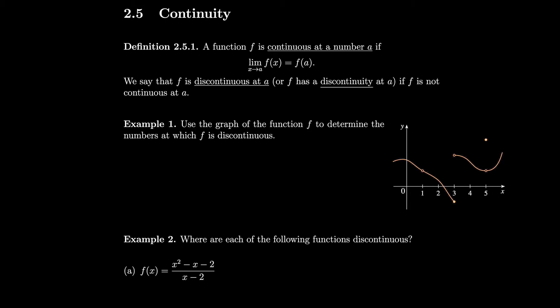We say f is discontinuous at a, or f has a discontinuity at a, if f is not continuous at a. In order to meet the condition of continuity, three things must hold: the limit must exist, the function value must exist (the function must be defined there), and the two values must be equal to each other.